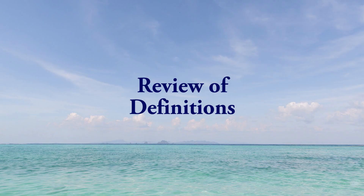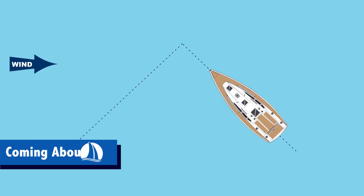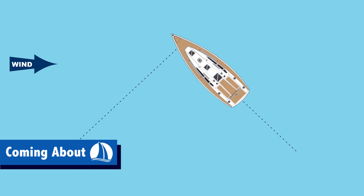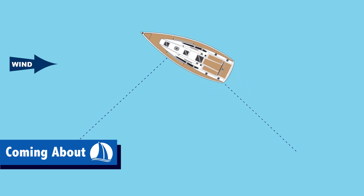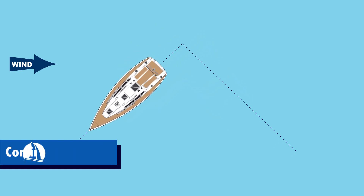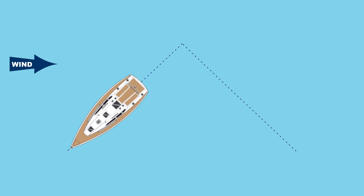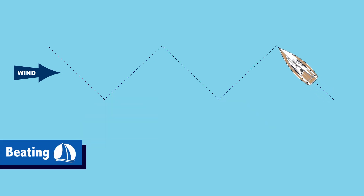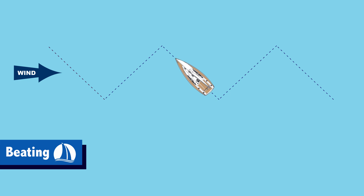Let's review some of the definitions that we covered in part one, parts of the boat and sailing terminology. Coming about is when the boat changes tack by putting the bow through the wind. When we come about in succession, in order to gain ground upwind, we call that beating.